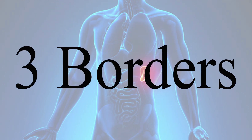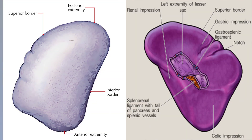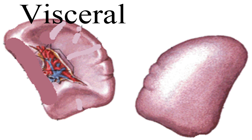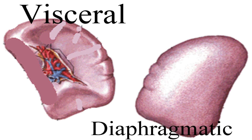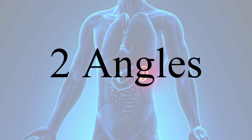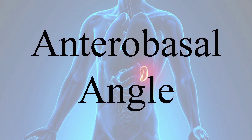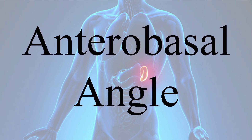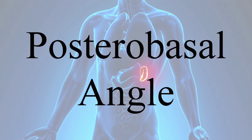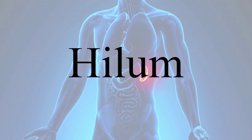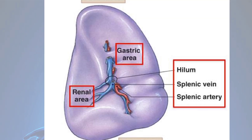The 3 borders are the superior border, inferior border, and intermediate border. The 2 surfaces are the visceral surface and the diaphragmatic surface — the visceral surface is concave and irregular, while the diaphragmatic surface is convex and smooth. The 2 angles are the anterior basal angle, which is the junction of the superior border with the anterior end, and the posterior basal angle, which is the junction of the inferior border with the anterior end. The hilum contains splenic vessels and nerves.